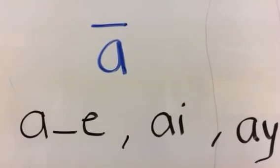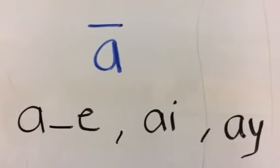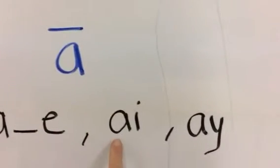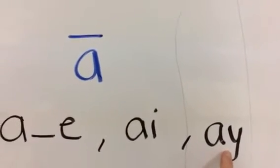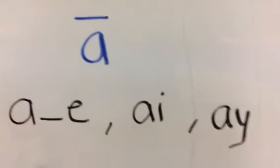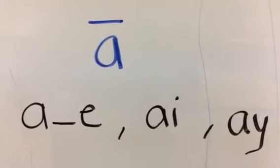This is practice for the long A sound. It can be written as A consonant E, AI, AY. There are a few other ways to write the sound A, but these are the most common ways, so we'll stick with that.